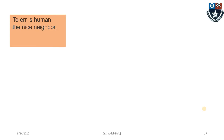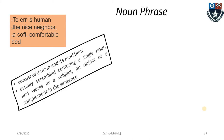Examples of noun phrases: 'to err is human,' 'the nice neighbor,' 'a soft comfortable bed.' A noun phrase consists of a noun and its modifier. 'Human,' 'neighbor,' 'bed' are the nouns; the rest are modifiers. A noun phrase is usually assembled around a single noun and works as a subject, object, or complement in the sentence.